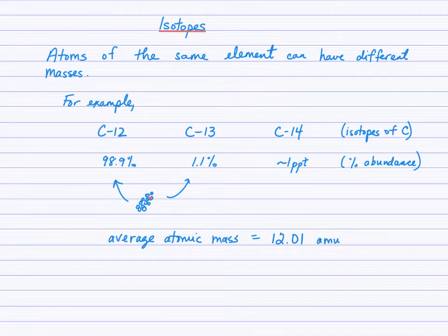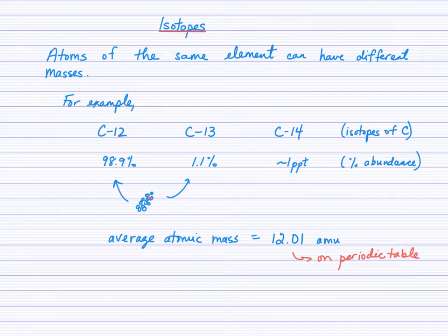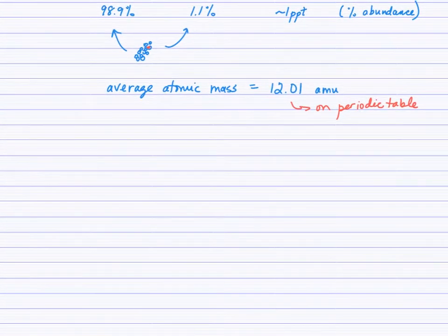You'll find this average atomic mass reported on the periodic table. It's very important to understand that the masses you read from the periodic table are, in fact, the average atomic mass — and it's a weighted average. To help you understand the concept of a weighted average, let's consider marks in a course.